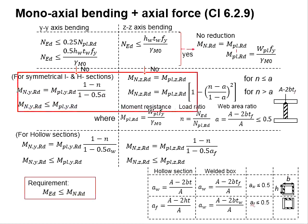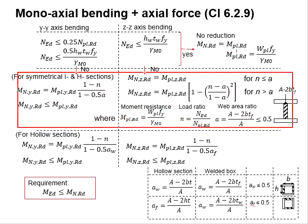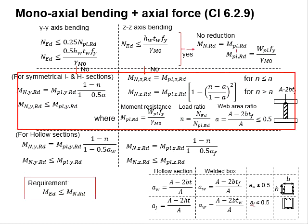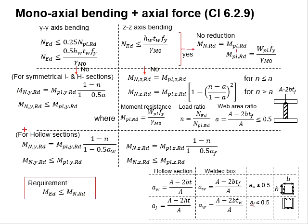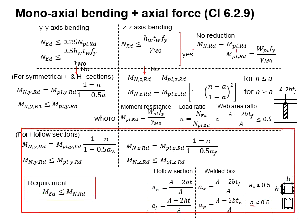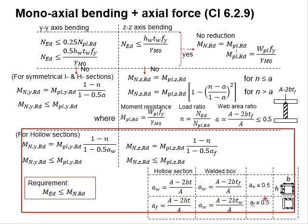This part represents members of I and H sections, while this part represents members for hollow sections.